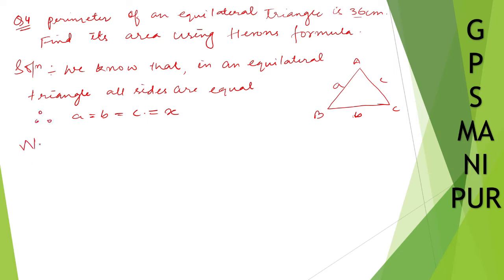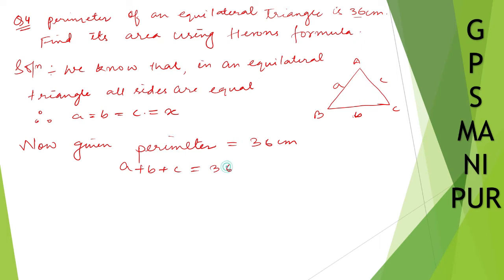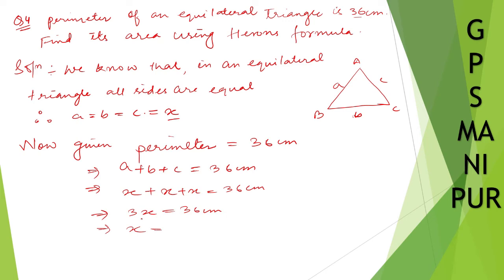Given that the perimeter is 36 centimeters, and perimeter means a plus b plus c equals 36. Since a, b, and c are all x, we get x plus x plus x equals 36, so 3x equals 36, therefore x equals 12 centimeters.